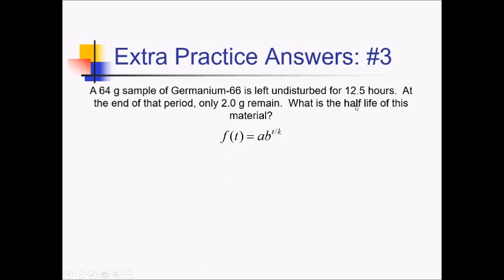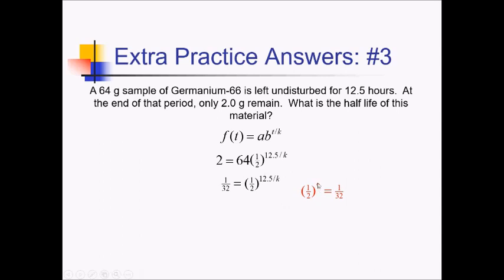We fill in values for all the other letters. F of T is the remaining amount: 2 grams. A is what you started with: 64 grams. B is one-half. T, the time, was 12.5 hours. We don't know K. Dividing both sides by 64 gives 2 over 64, which reduces to 1 over 32. Now, one-half to the 5th power gives 1 over 32, so 12.5 over K must equal 5.